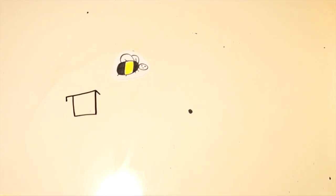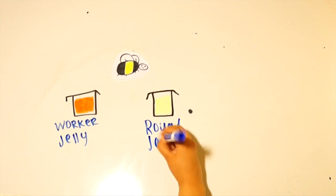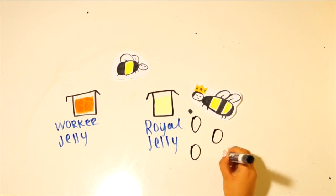A fertilized egg, which are the females, can either turn into a worker bee or a queen bee, depending on the type of jelly they're fed. A worker bee has glands that can produce two types of jellies, worker jelly and royal jelly. If an egg is fed worker jelly, it'll turn into a worker bee. If an egg is fed royal jelly, it'll turn into a queen bee.